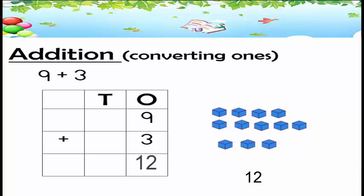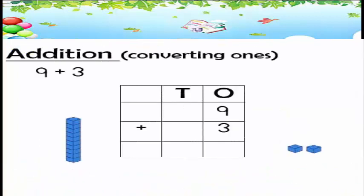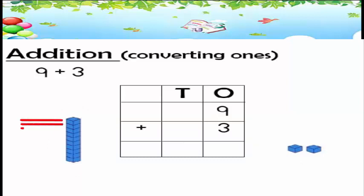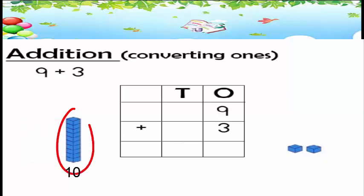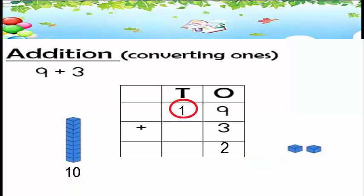Can we write 12 in the ones column? No, that is not right. We cannot write the whole number in the ones column. So we change 12 into 1 ten and 2 ones. We make one group of ten, and the remaining 2 ones stay. We write 2 in the ones column and carry 1 ten forward into the tens column. Our answer is 12.